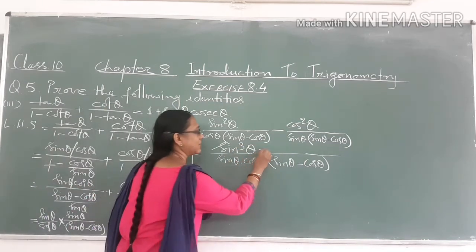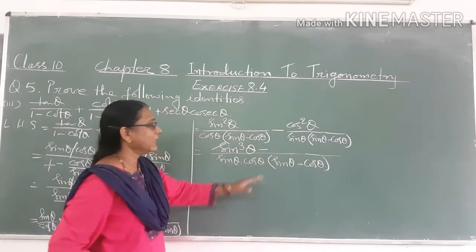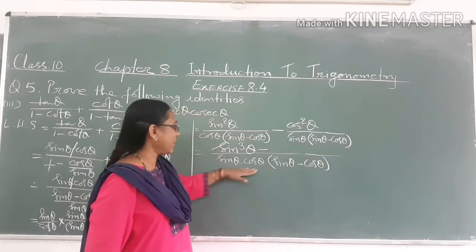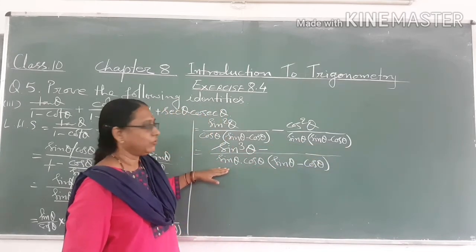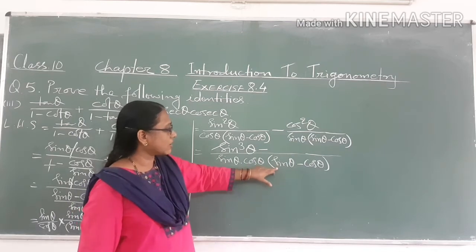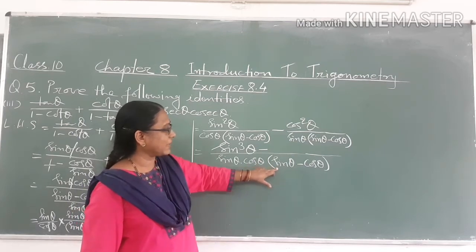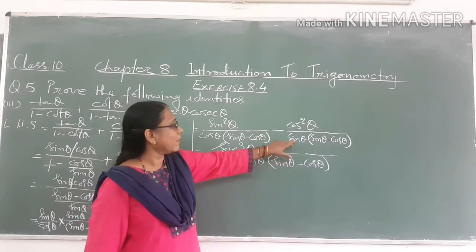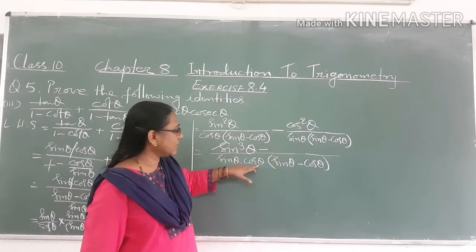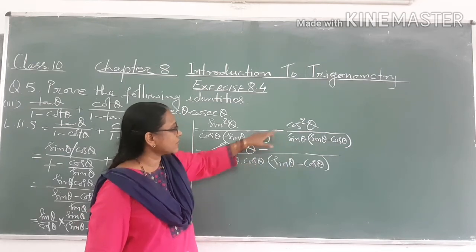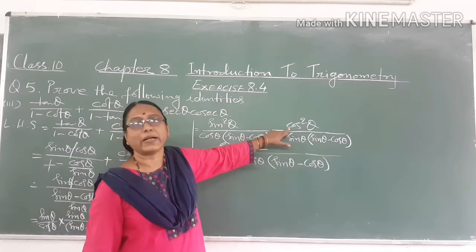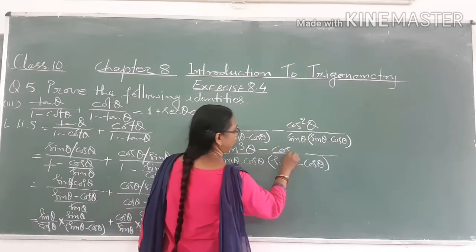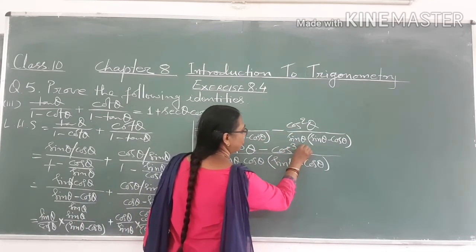Similarly, when we divide this whole denominator, sin θ and sin θ minus cos θ. The bracket is full of cos θ. Then cos θ and cos θ — cos θ and cos² θ will multiply, and then we will get cos θ.